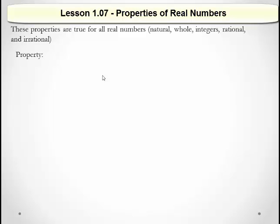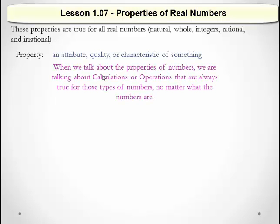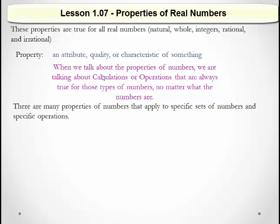So what's a property? A property is defined as an attribute, quality, or characteristic of something. When we talk about the properties of numbers, we're talking about calculations or operations that are always true for these types of numbers no matter what the numbers are. There are many properties of numbers that apply to specific sets of numbers or specific operations. In this module, we're just going to discuss a few properties.